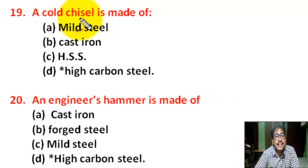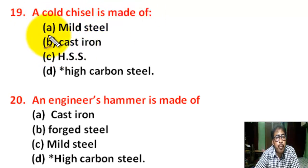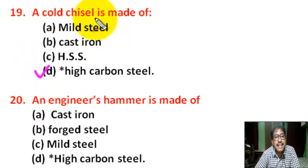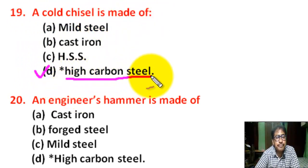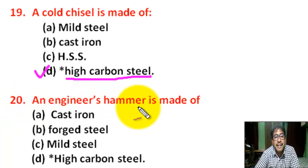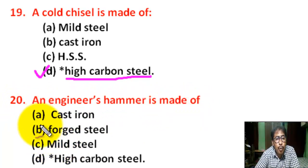Question number nineteen: a cold chisel is made of — correct answer is D. Question number twenty: an engineering hammer is made of — there are four options.